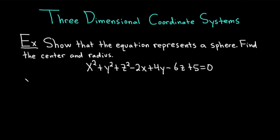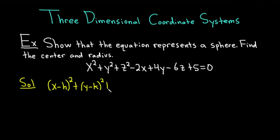Let's go ahead and work through this solution. First, let me show you what the equation of a sphere actually looks like. In three-dimensional space, the equation of a sphere is: x minus h quantity squared plus y minus k quantity squared plus z minus l quantity squared equals r squared. The center of the sphere is given by the ordered triple h, k, l — a point in three-dimensional space.